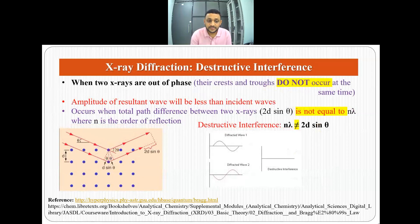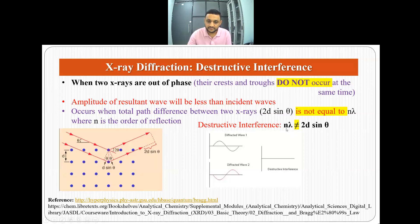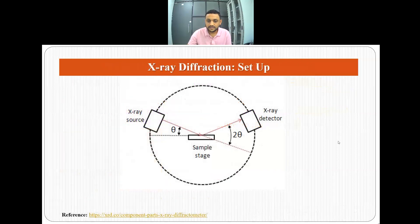For destructive interference, when two X-rays are out of phase — their crests and troughs do not occur at the same time — the amplitude of the resultant wave will be less than the incident waves. The total path difference 2d·sinθ is not equal to nλ. In this scenario, destructive interference occurs as per Bragg's law. We use constructive and destructive interference in our XRD setup.